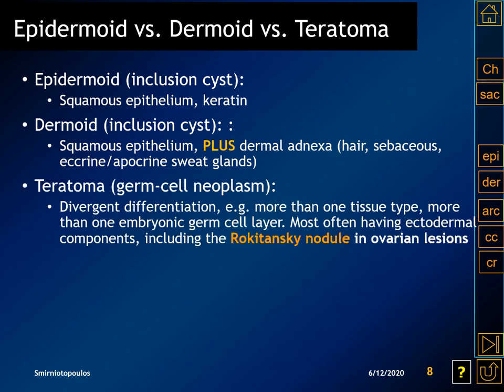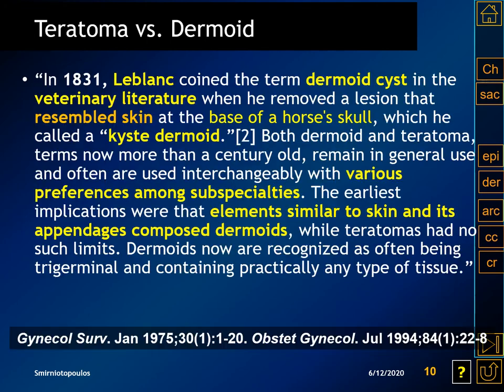In contradistinction, the teratoma is actually a germ cell neoplasm arising from a multi-potential cell. It is characterized by divergent differentiation, representing more than one tissue type and classically more than one of the three embryonic germ layers. The classic ovarian teratoma, which unfortunately has the nickname of dermoid, has a Rokitansky nodule that is purely ectodermal and epithelial, but embedded within the lining will be additional tissues showing its divergent origin. The confusion between dermoids and teratomas began in 1831 when a veterinary pathologist described a dermoid cyst in the neck of a horse that was actually a teratoma, and this confusion has persisted to this day.